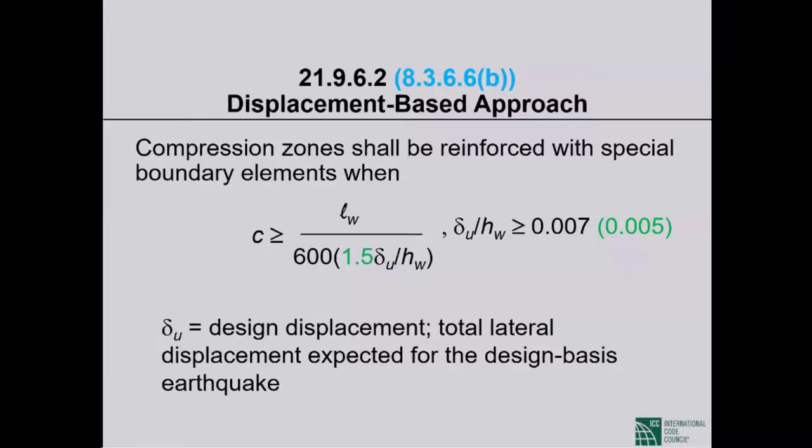When the neutral axis depth exceeds the critical value, we do not confine the entire compression zone from the extreme compression fiber to the neutral axis depth. We confine most of it — not all, because we do not have significant compression over the entire compression zone. The extent of confinement and why it makes sense will be discussed shortly.